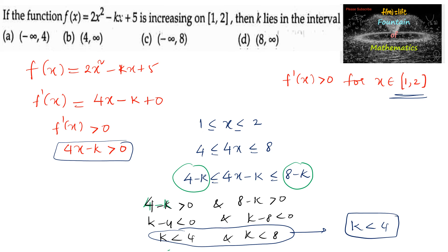k < 4 means k belongs to (-∞, 4). That is option a. So we can go with option a.